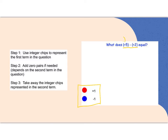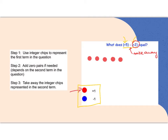So if we have positive 5 take away positive 2, that means I have to start with the positive 5. So if I start with 5 big red chips — 1, 2, 3, 4, 5 — the subtract means take away. So this is just take away, and then positive 2. Positive is red, so I need to take away 2 red chips, which I have.